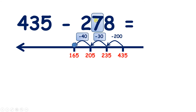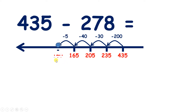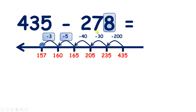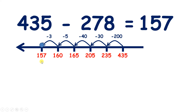So we've subtracted 7 tens altogether, because we subtracted 3 tens, then 4 tens. Now we just need to take away our 8 units. So if we're on 165 and we take away 5, that gives us 160. Now we can take away 3 more units. So we've subtracted 8 altogether, and now we have our answer 157.